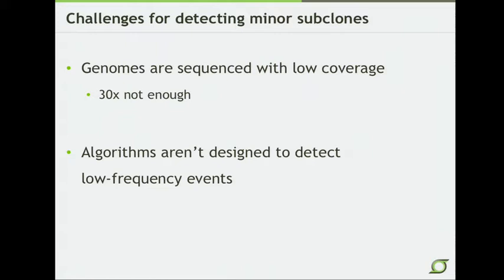There are several challenges that remain in detecting these. First, genomes are sequenced with low coverage — 30x whole genome sequencing is clearly not enough to detect events present only at 1 or 2 percent in the tumor, and even 100 or 150x exome sequencing may not be deep enough. But that at least seems like a tractable problem, as sequencing costs are dropping rapidly. A more pervasive problem is that algorithms aren't designed to detect these low-frequency events by and large.